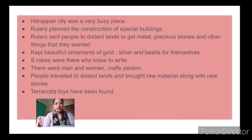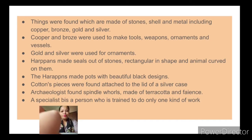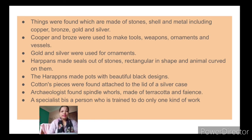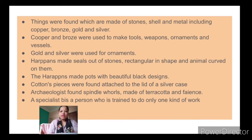Terracotta toys have been found which children used to play with. Archaeologists found various crafts in the city. Things were found made of stones, seals, and metals including copper, bronze, gold, and silver. These four important metals, along with stones and seals, were the main materials used in Harappan crafts.